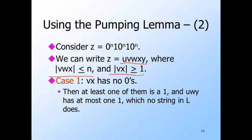But then, if we pump zero times to get the string u w y, we know that there is at most one 1 in this string. The pumping lemma claims it is in the language L, but it can't be because all strings in L have exactly two ones.